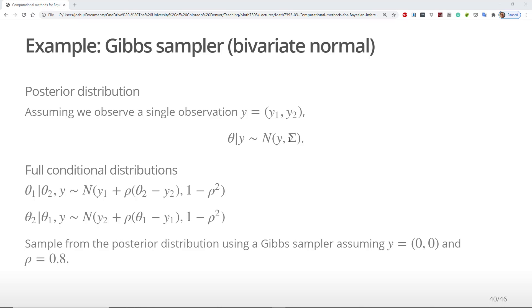You have to know something about the conditional distribution of a multivariate normal to derive the full conditionals. One place you can find this information is on Wikipedia. Once you have the formula defining the conditional distribution of a multivariate normal, you can show that the full conditional distribution of theta1, i.e. theta1 conditional on theta2 and the observed data y, is normal with a mean of y1 plus rho times theta2 minus y2, and a variance of 1 minus rho squared.